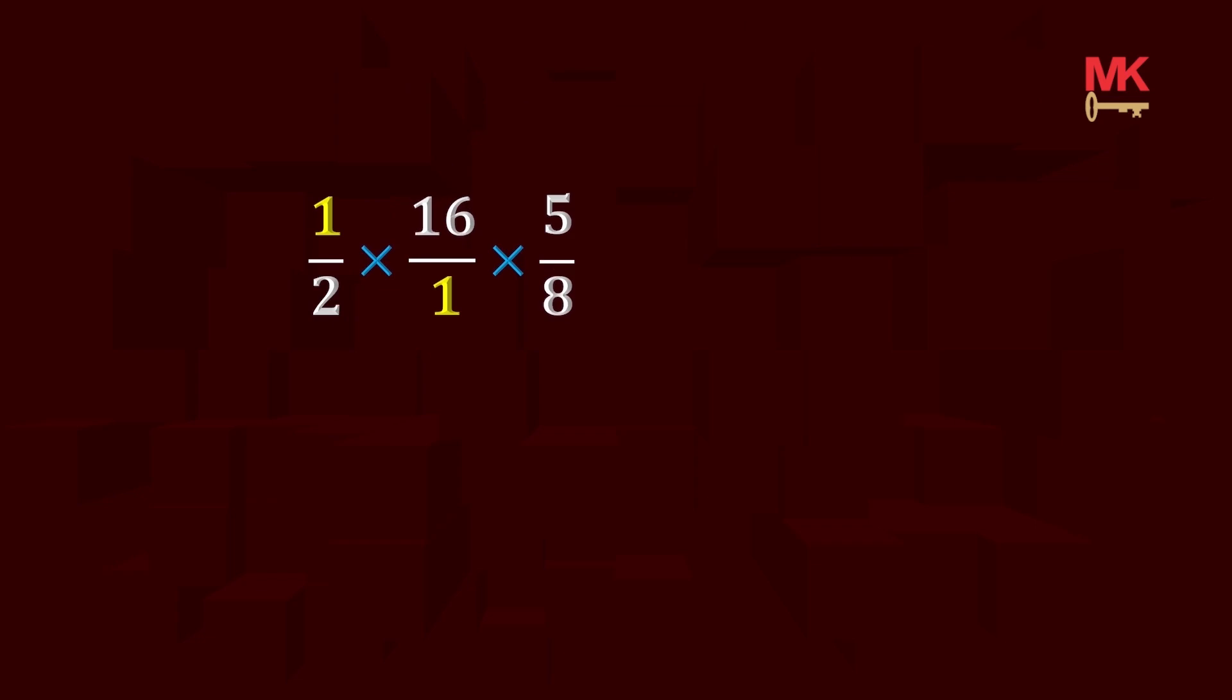and 16 together first. 8 into itself is 1. 8 into 16 is 2. Now, we can see a 2 at the bottom and a 2 at the top. Both reduce to 1 or cancel out. We are left with just 1 times 5 divided by 1 which is 5.